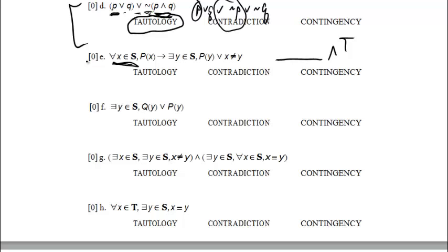If domains were allowed to be empty, and the outermost operator were a universal, we could say the statement can't possibly be a contradiction, because it can be true when the domain is empty. But we don't need that argument here, because we know for sure that s is non-empty. So let's try proving this statement instead.